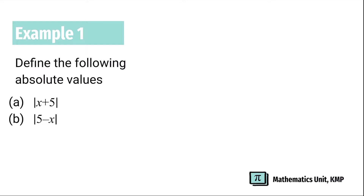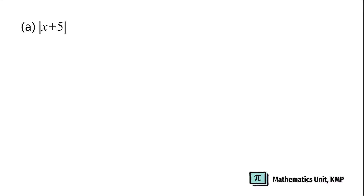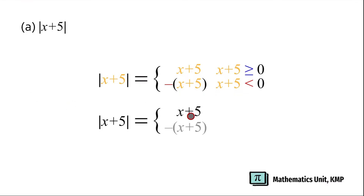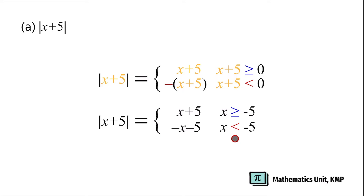For example 1, define the following absolute values. Absolute value of X plus 5. Focus on the X plus 5. We may write it as: positive X plus 5 for X plus 5 greater than or equal to 0, and negative X plus 5 for X plus 5 less than 0. Be careful that you need to put a bracket in front of the negative. Simplifying: absolute of X plus 5 equals positive X plus 5, and expanding the negative gives negative X minus 5. For the interval, bringing positive 5 to the right-hand side gives X greater than or equal to negative 5, and X less than negative 5.